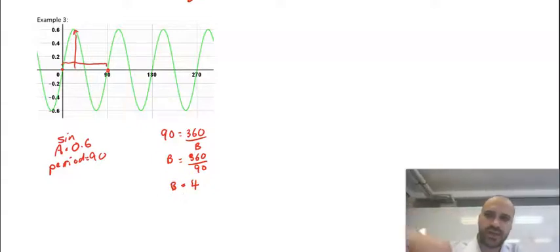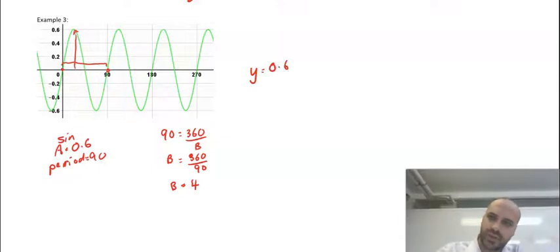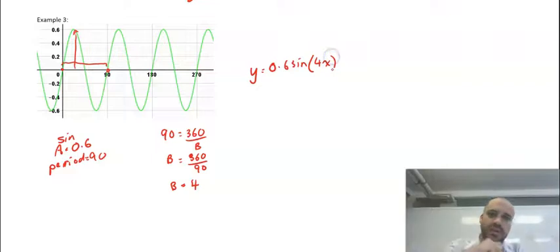Putting all of this together, we get y equals the a value, 0.6. The curve, which is a sine curve, b value, 4x. y equals 0.6 sine 4x.